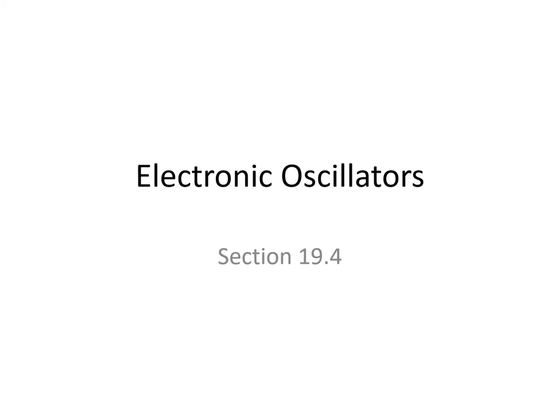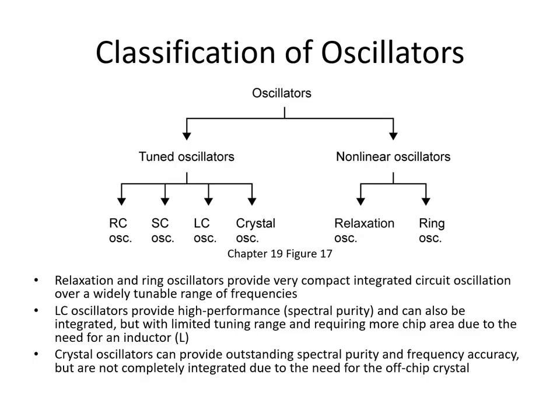In this video, we'll review the basics of electronic oscillator integrated circuits. Electronic oscillator circuits can be broadly categorized as either tuned oscillators or nonlinear oscillators. Tuned oscillators rely on a resonant circuit connected in such a manner that oscillations are sustained, similar to a tuning fork that's continually being struck. Nonlinear oscillators rely on feedback to sustain oscillations and a nonlinear element in the feedback loop to limit the amplitude of those oscillations. Relaxation and ring oscillators provide very compact integrated circuits and a very wide range of frequencies at which they can oscillate.